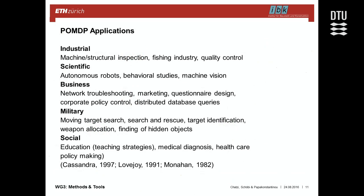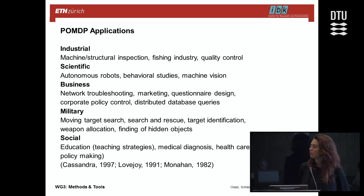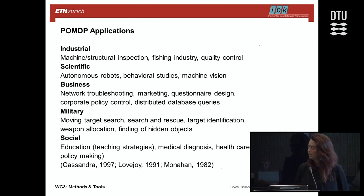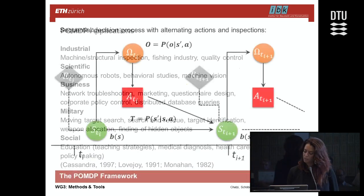This Partially Observable Markov Decision Process (POMDP) approach is used in an extensive number of diverse domains such as industry, robotics, troubleshooting, and marketing. A good parallel with infrastructure management is the robotics example, where this approach is commonly used to decide on the optimal path a robot needs to take given possible actions and available observations.